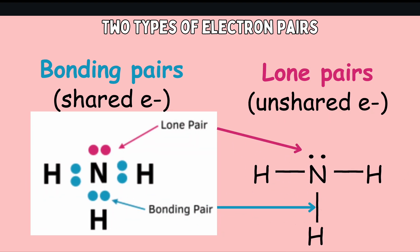Let's quickly go over the two different types of electron pairs. Remember a pair means two. So we have our bonding pairs, which are these shared electrons. Shared electrons mean they are shared between two different atoms, creating this covalent bond.